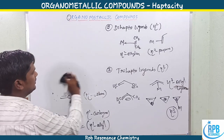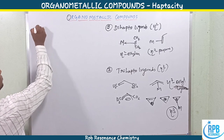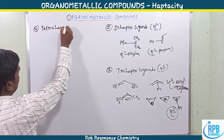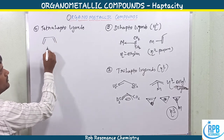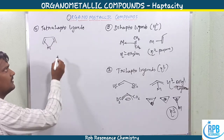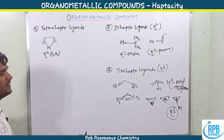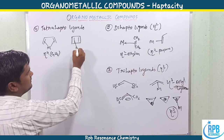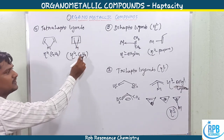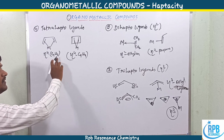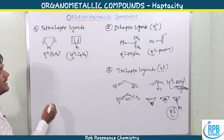Tetrahapto ligands (η4): four atoms are connected to the metal. The best example is 1,3-butadiene (η4-C4H6). Cyclic molecules are also possible - cyclobutadiene (η4-C4H4) where the number of carbon and hydrogen atoms are equal indicates a cyclic molecule, while more hydrogens indicate an open-chain molecule.